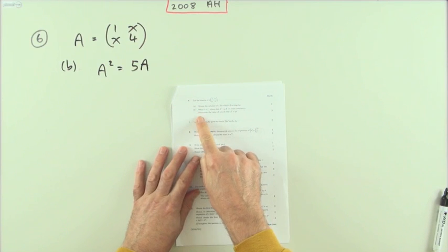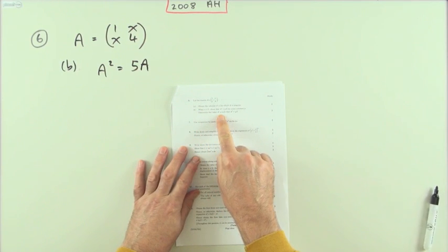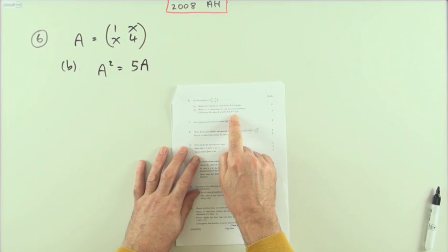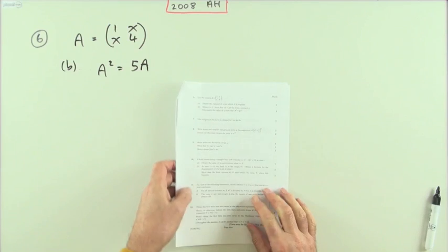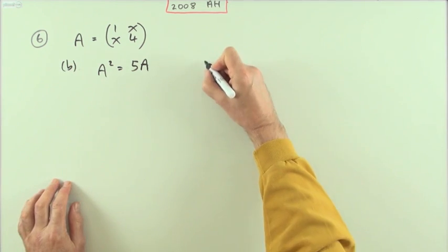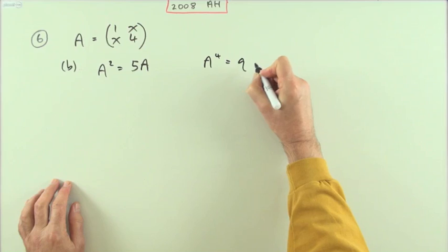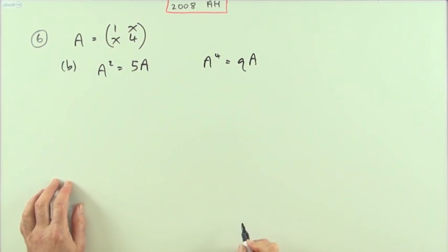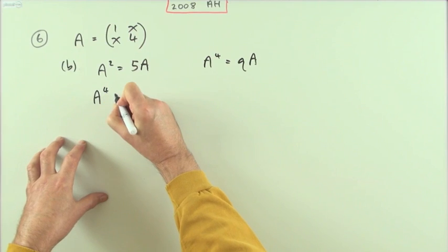The second power of B: determine the value of q such that A to the four equals qA. Again, I think for safety I'll just state this value of q afterwards. So A to the four is some number again times the original. How can you get A to the four?